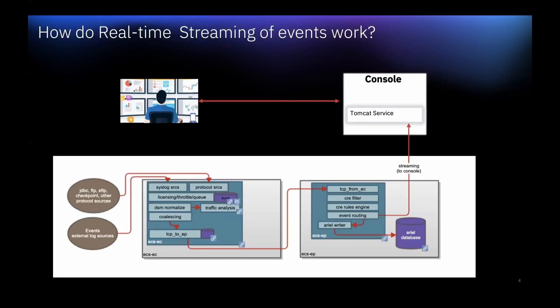So this is how events come to QRadar — they are processed and stored. Once the events are available for storing with the help of Ariel Writer, they are also available for real-time streaming with the help of the Streaming component. In this way, analysts will be able to see real-time events in the Log Activity tab and real-time flows in the Network Activity tab. Thank you for joining us. If you need more assistance, use the links in the description.